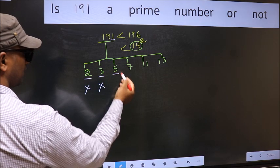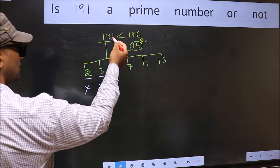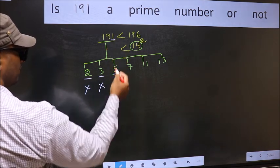Next, number 5. Last digit is neither 0 nor 5. So this is not divisible by 5.